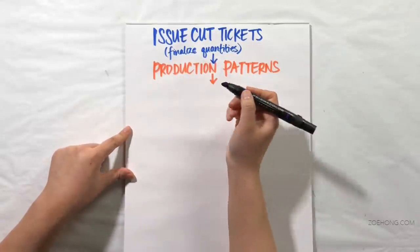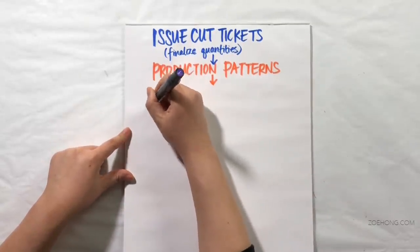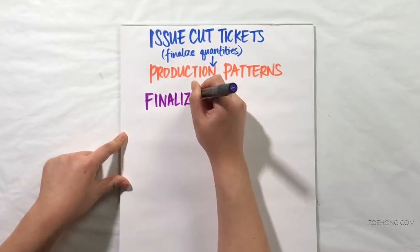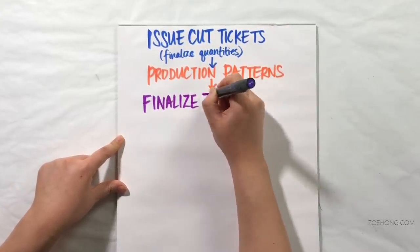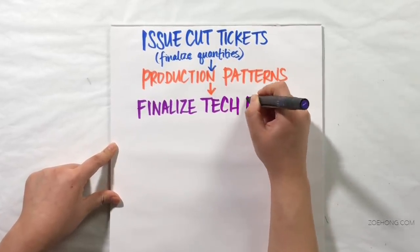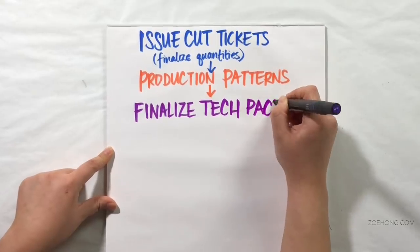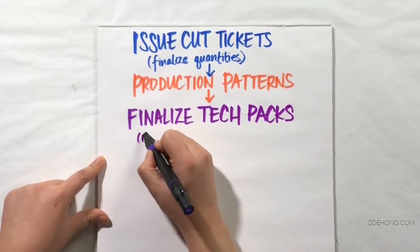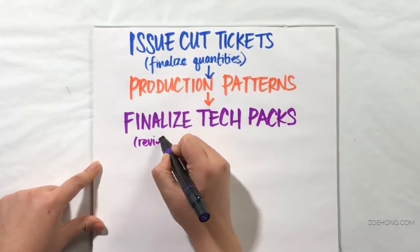Step three, finalize your tech packs. I have lots of videos on tech packs and I'll link that in the description box, but right now I want to talk about ordering materials off the information in your tech packs. At this point, you should have filled out your bill of materials, your BOM, in your tech pack. So you should have a checklist of what you need to order.